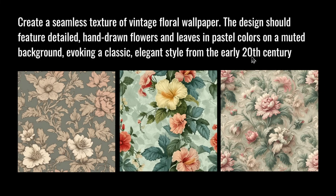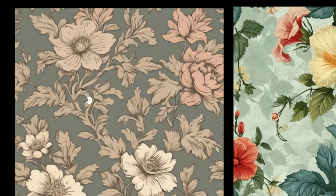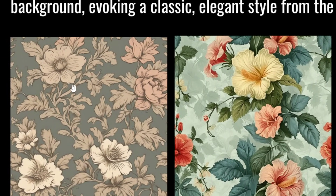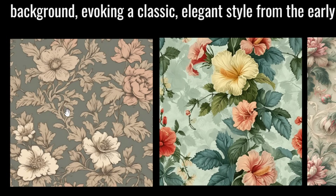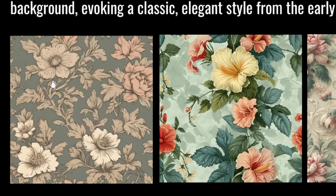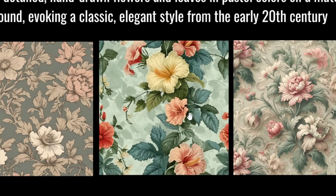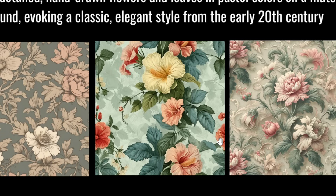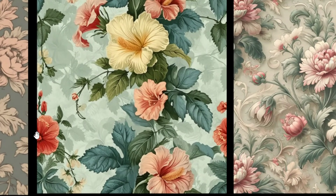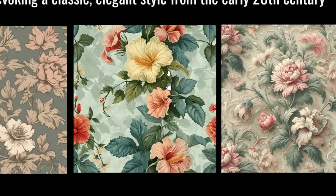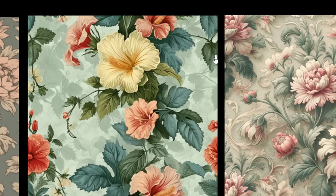Next up we have seamless textures. The prompt: 'Create a seamless texture of a vintage floral wallpaper. The design should feature detailed hand-drawn flowers and leaves in pastel colors on a muted background, evoking a classic elegant style from the early 20th century.' Image one looks very hand-drawn — I could see this on a wallpaper. I'm seeing the pastel and muted colors, though it muted the foreground when the prompt said to mute only the background. As for seamlessness, no major flower petals hang on the outside so there's no obvious mismatch when puzzling them together.